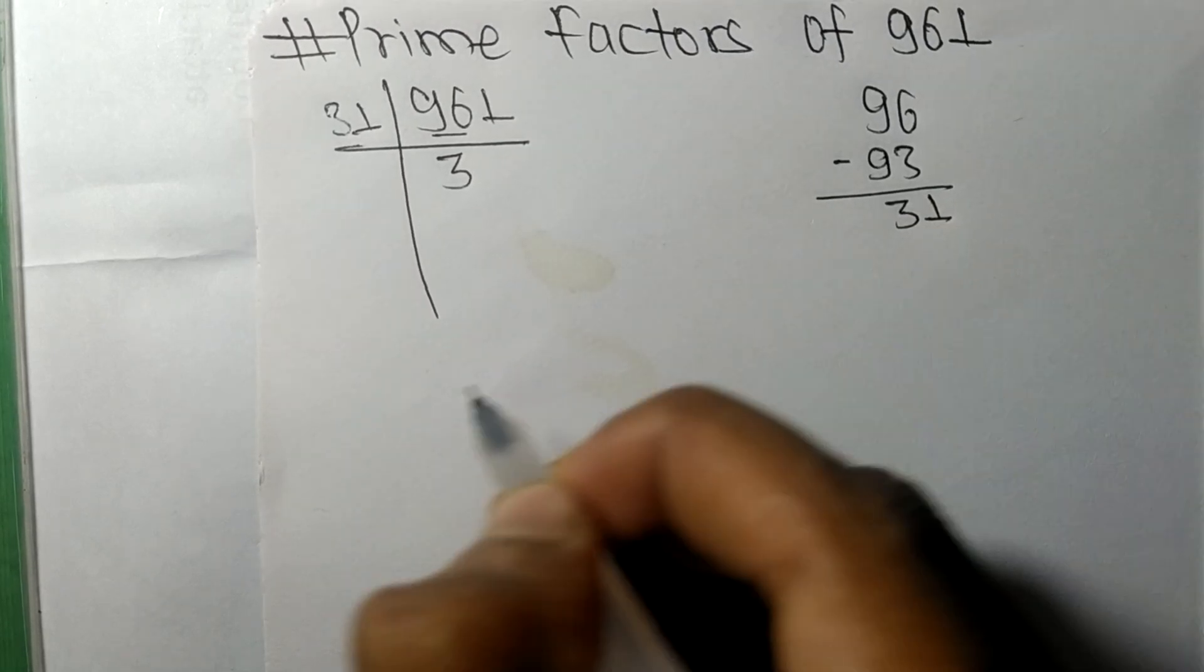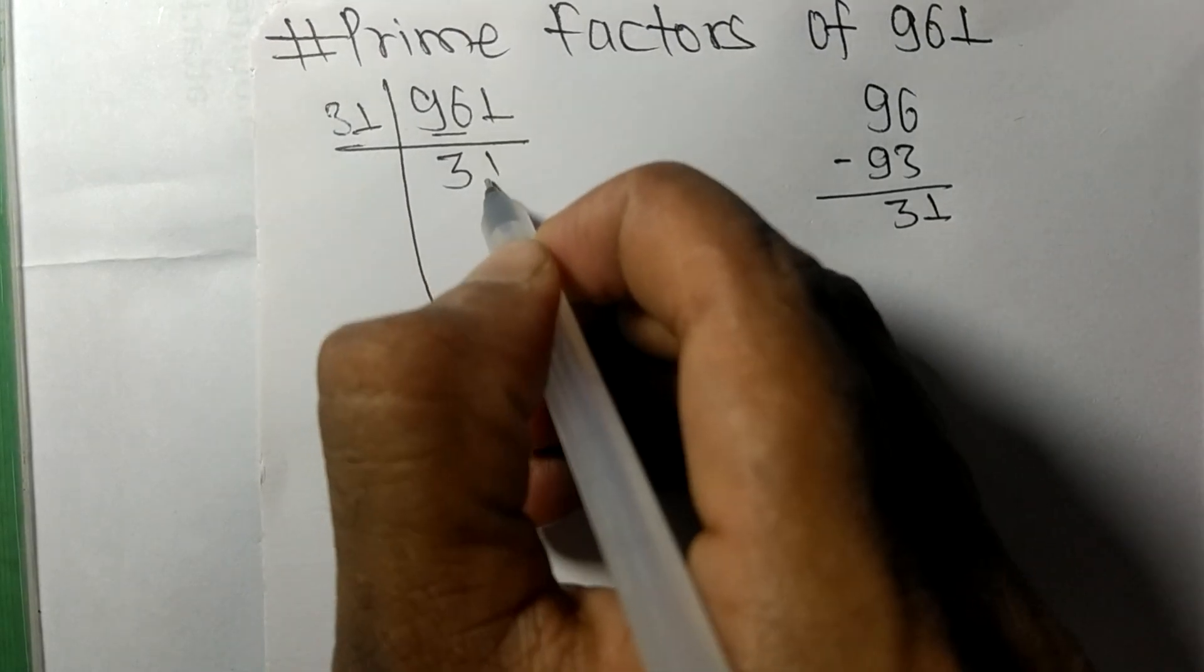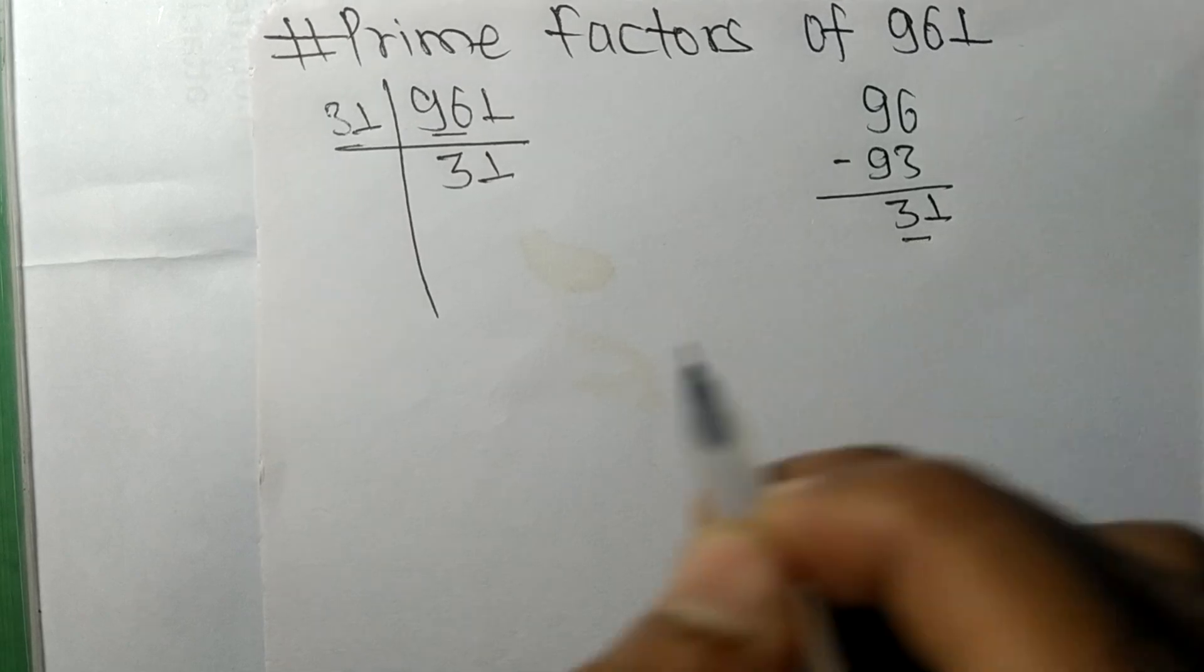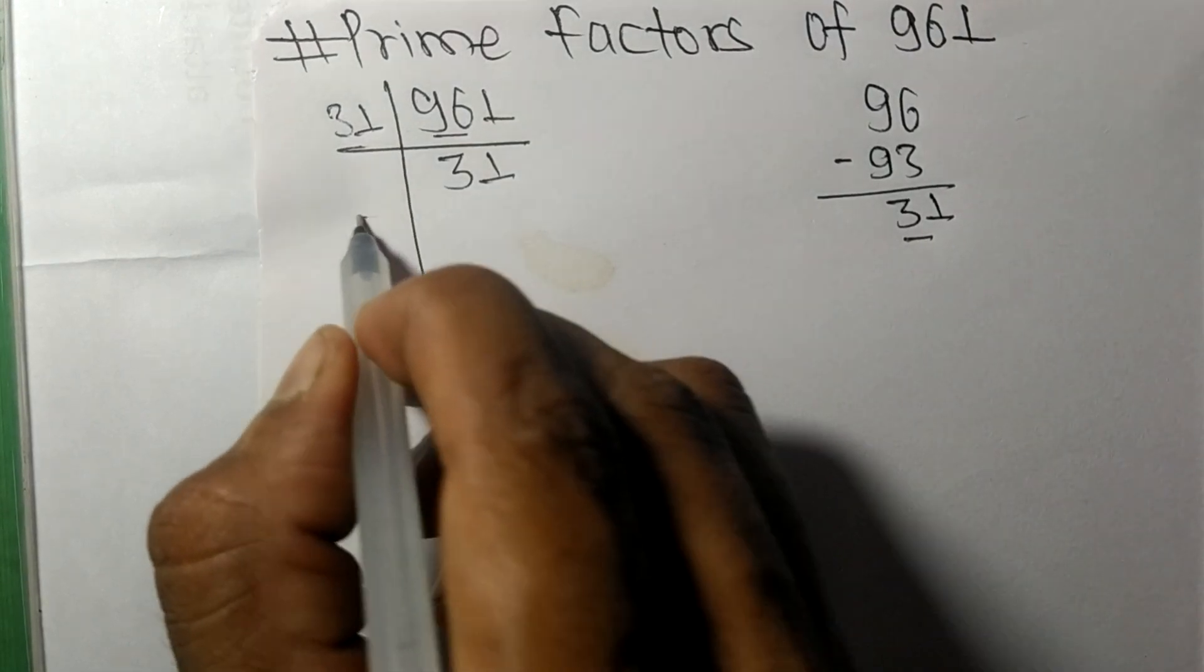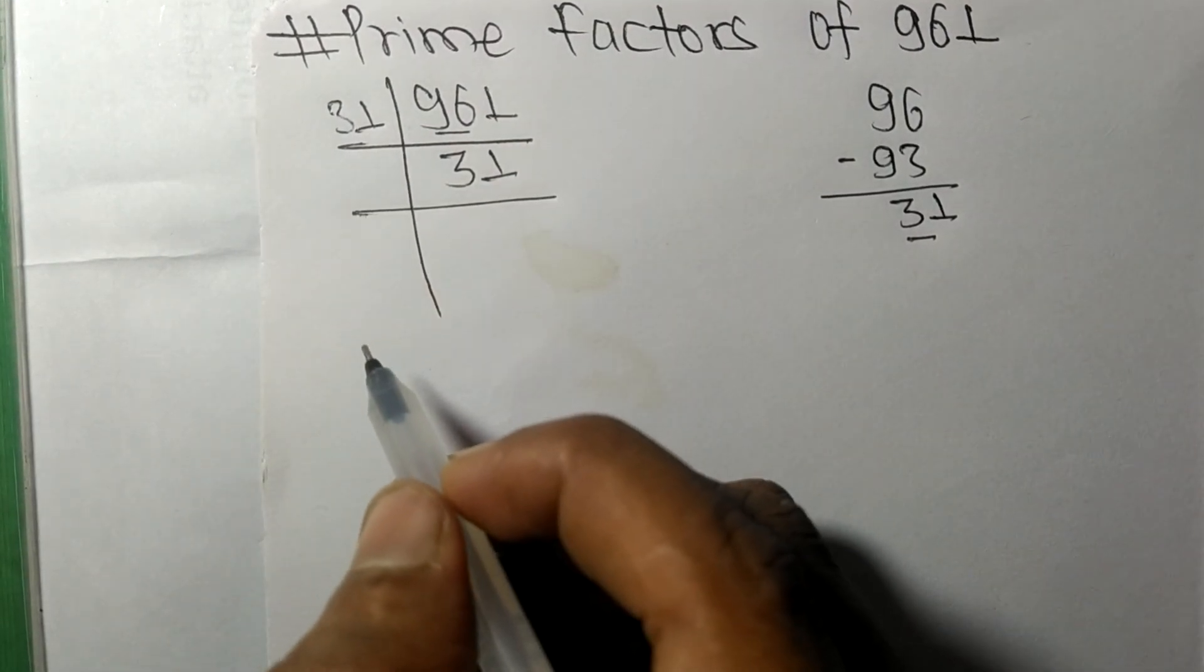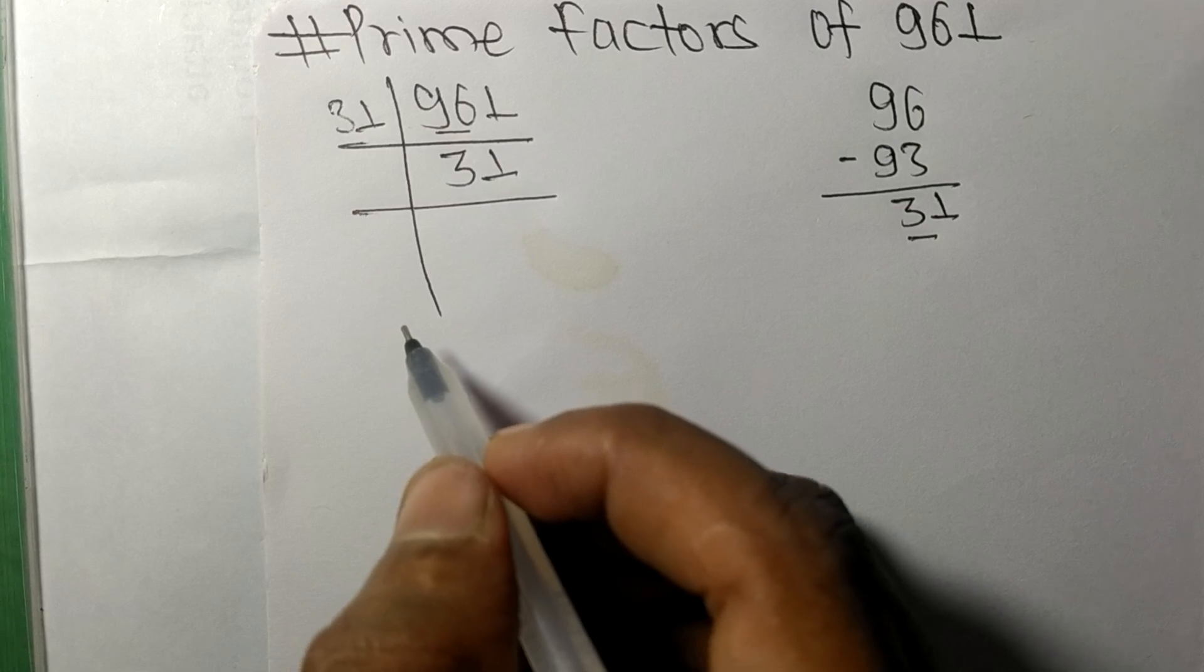So 31 times 1 means 31. So now we got 31 which is a prime number, so it is exactly divisible by 31 only.